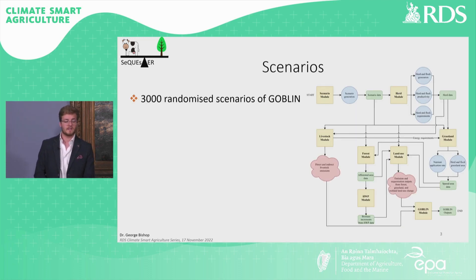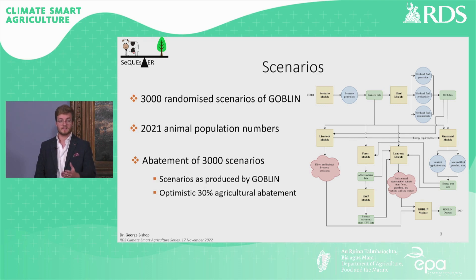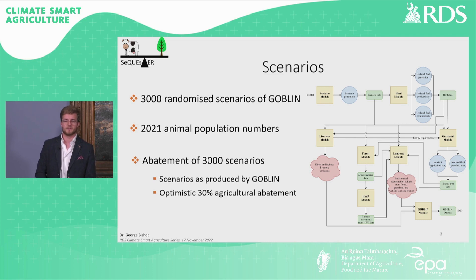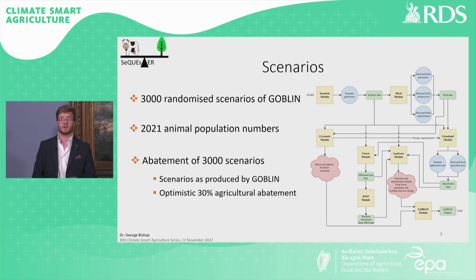We looked at 3,000 randomised scenarios using Goblin, which is described in a companion presentation, where we set the animal numbers between a value of 1 and 2021 values. As well as creating these 3,000 randomised scenarios from Goblin, it is also able to achieve climate neutrality not just through specific configurations of land use and agricultural production, but also through the reduction of agricultural emissions at source following mitigation measures. As such, we took these 3,000 scenarios to create a second set of 3,000 scenarios where we reduced agricultural emissions by 30% to have some agricultural abatement scenarios.